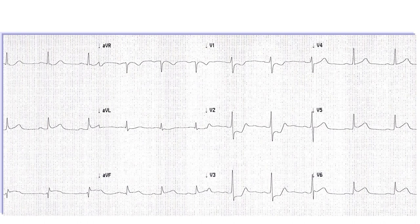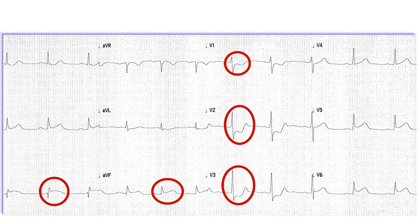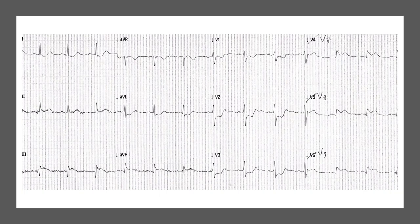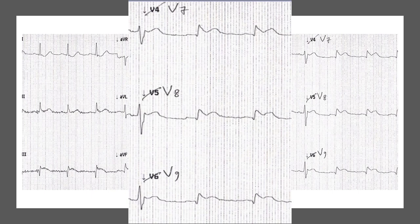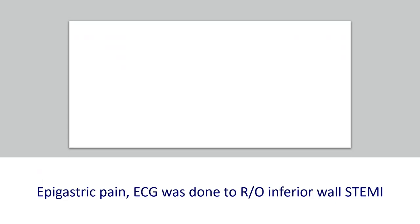Here is the example we just discussed: inferior lead ST elevation with tall R waves, ST depression, and upright T waves in V1 to V3. Because I suspected posterior wall STEMI, I did posterior leads. Making them bigger, you can clearly see ST elevation in V7, V8, and V9.